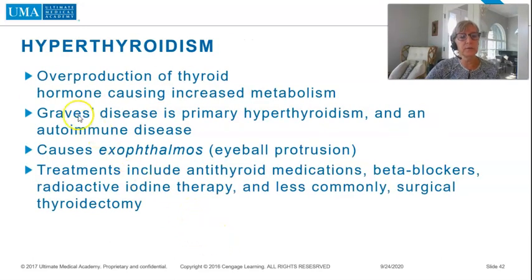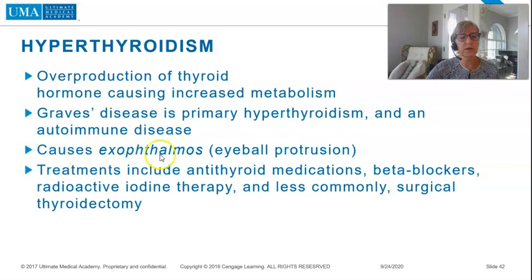Hyperthyroidism is overproduction of thyroid hormone causing increased metabolism. Graves' disease is a primary hyperthyroidism and an autoimmune disease that causes exophthalmos, or eyeball protrusion. Treatments include antithyroid medications, beta blockers, radioactive iodine therapy, and less commonly surgical thyroidectomy.